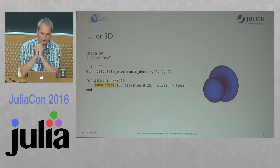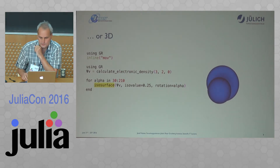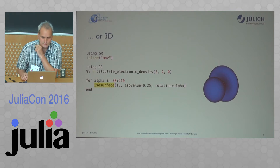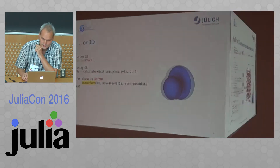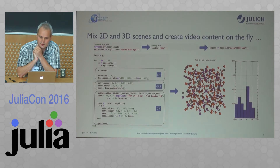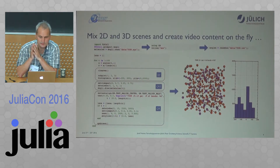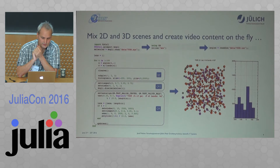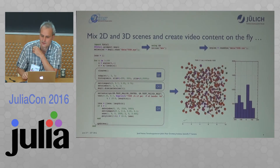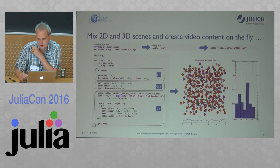There's also a function to display ISO surfaces. The resolution is quite good and you can export this to WebGL, PDF, or whatever you want to use. You can mix two-dimensional and three-dimensional scenes and create video content on the fly. There are three different parts: a part using the Matlab-like plot layer, a part using three-dimensional graphics, and a part using the lower-level functions of the GR framework. With those functions you can create a histogram of atom positions displayed in the GR3 framework, which is based on OpenGL.